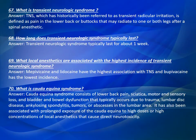Question 67: What is transient neurologic syndrome? TNS, which has historically been referred to as transient radicular irritation, is defined as pain in the lower back or buttocks that may radiate to one or both legs after spinal anesthetic. Question 68: How long does transient neurologic syndrome typically last? Transient neurologic syndrome typically lasts for about 1 week.